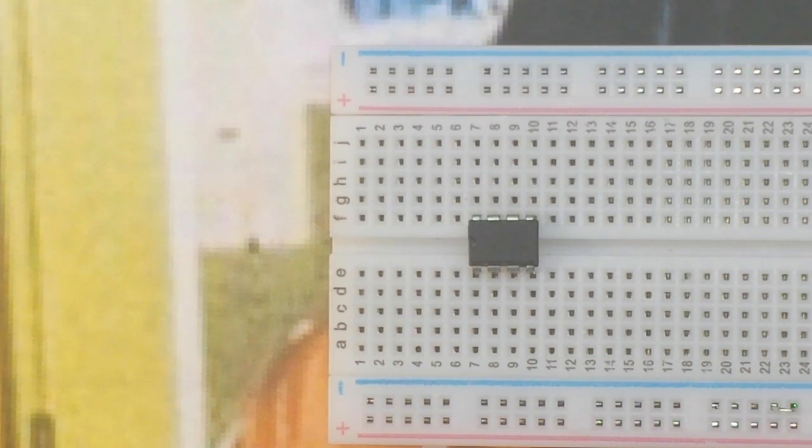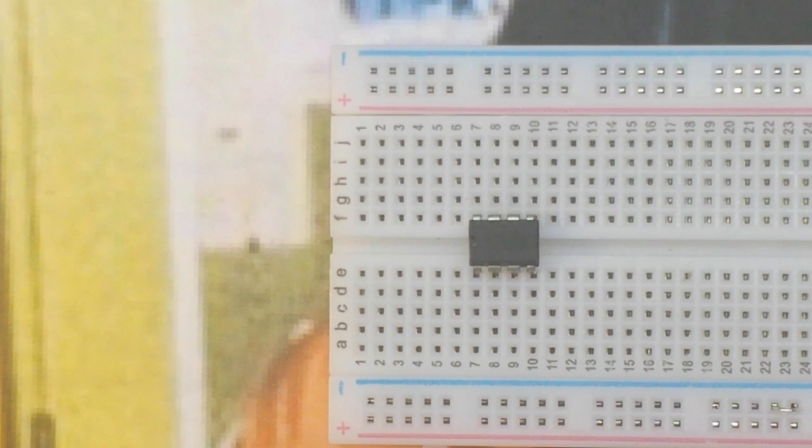Hey, what's happening guys? Alright, ask yourself a question. What is the most widely produced integrated circuit of all time? If you're into electronics at all, you know it's this little 8-pin guy right here. The 555 timer.